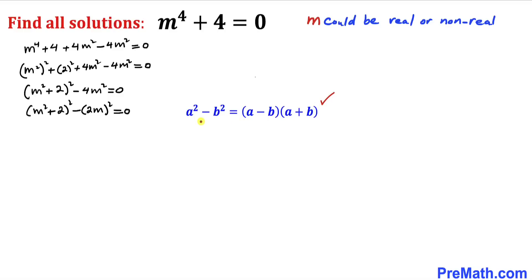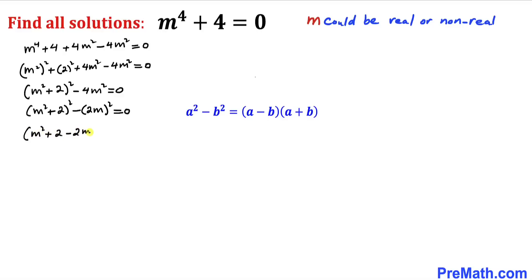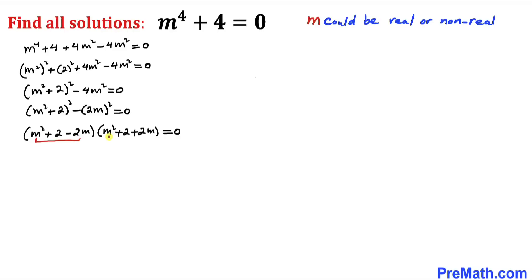Now let's recall the difference of two squares identity: a² - b² = (a + b)(a - b). Calling this our a and this our b, the equation can be written as (m² + 2 + 2m)(m² + 2 - 2m) = 0.